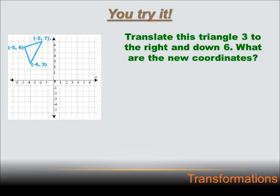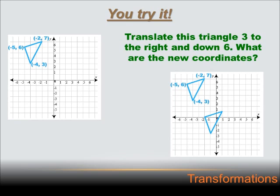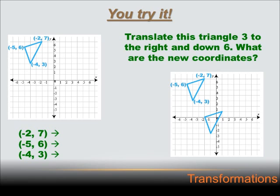We're going to translate this triangle by sliding it three to the right and down six, then figure out what the new coordinates are. Let's slide it first — take one of the vertices in the original triangle and move it three to the right and then down six. That's the corresponding vertex in the image of the new triangle. My original coordinates were (−2, 7), (−5, 6), and (−4, 3).